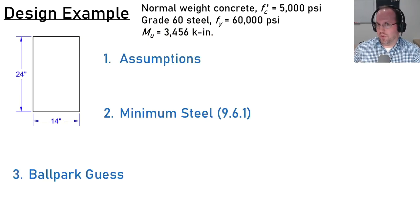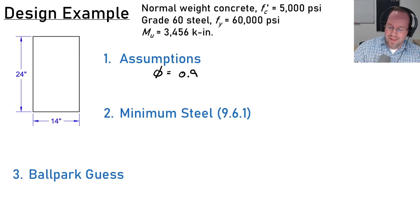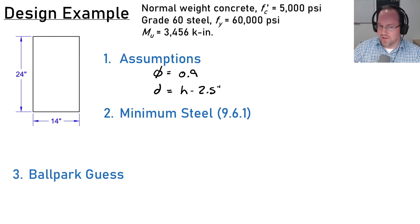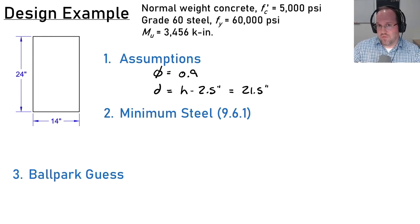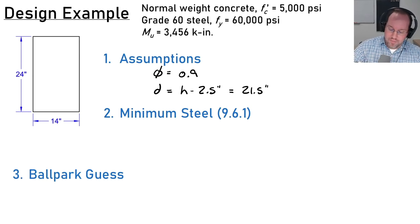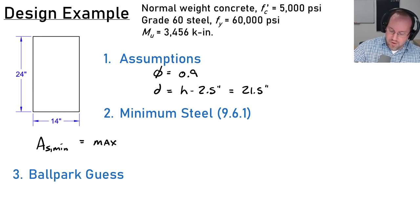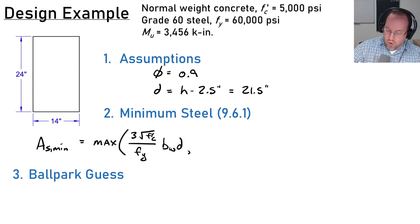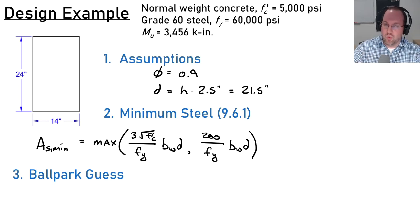Now let's make our primary assumptions: φ = 0.9, and depth to steel d = h − 2.5 inches. With h = 24 inches, d = 21.5 inches for a single layer of steel. You should also check the minimum area of steel per ACI 318 Section 9.6.1 — this minimum ensures crack control. The expression is the maximum of: (3√f'c / fy)·bw·d or (200 psi / fy)·bw·d.